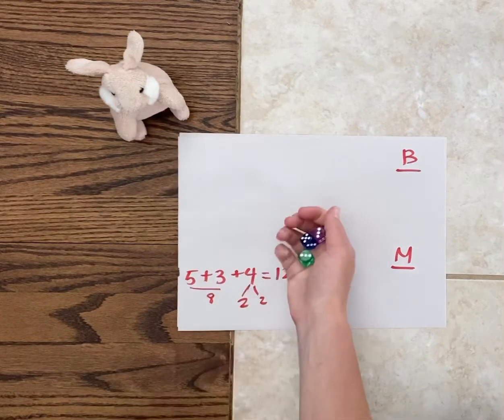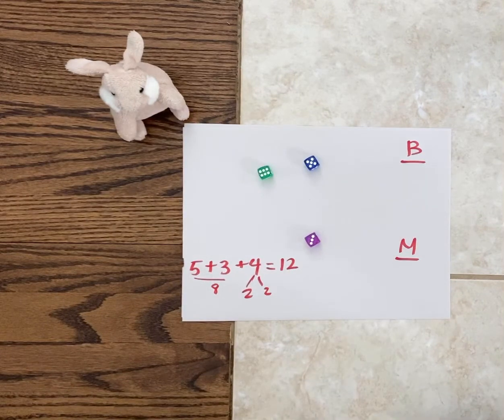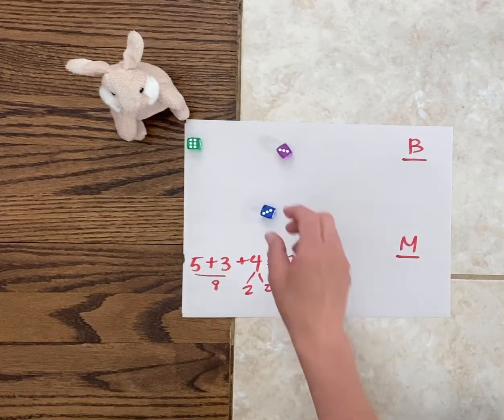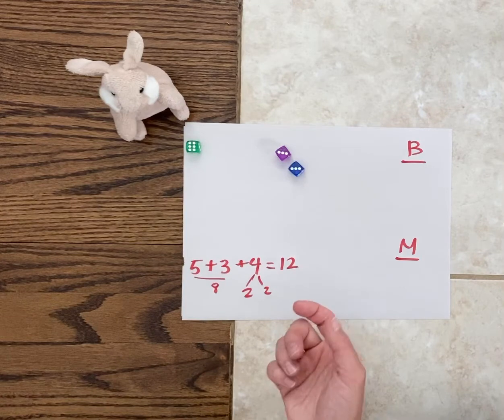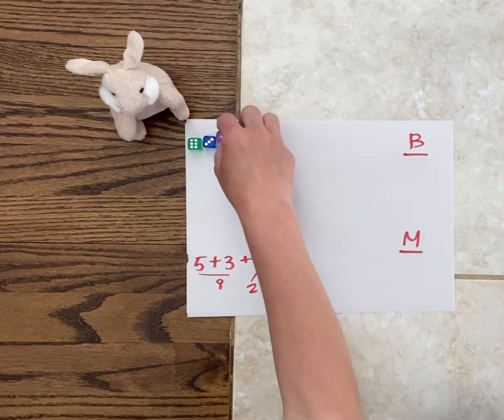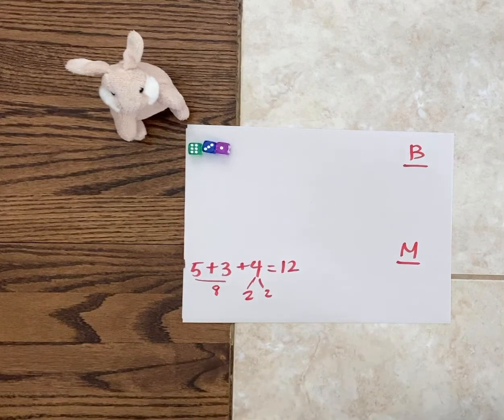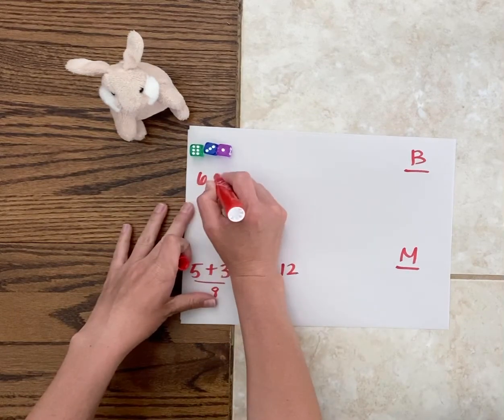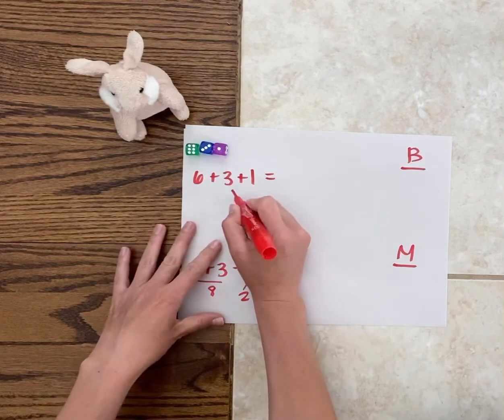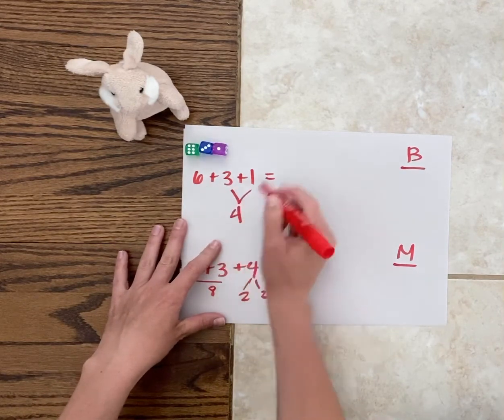All right, now it'll be Bunny's turn. So Bunny's going to roll all three of the dice and keep the largest number that he rolled, so he'll keep the six and roll the next two. Oh, these are the same, so he could choose to keep either three, and then roll the last one and is stuck with whatever he gets. So he has 6 + 3 + 1. Now Bunny might know that 3 + 1 is 4, 6 + 4 is 10.